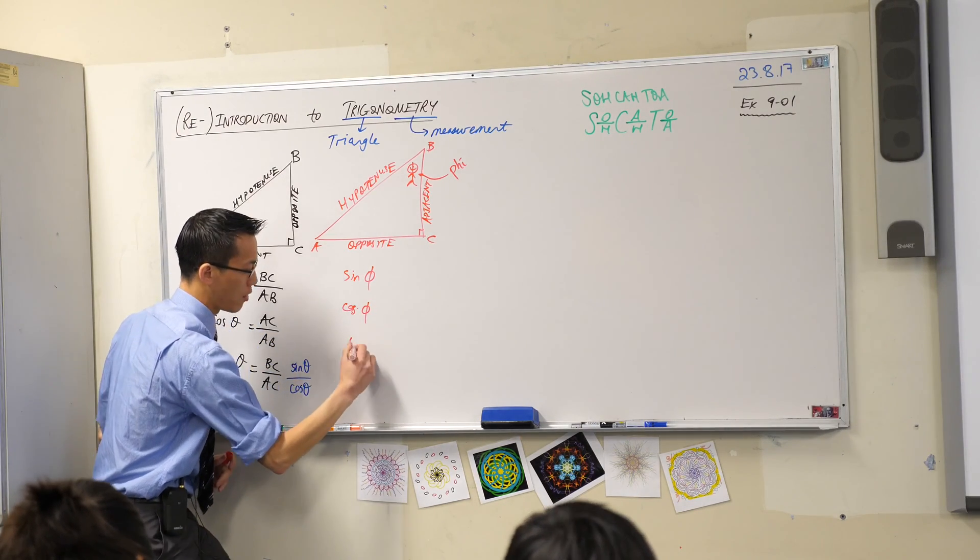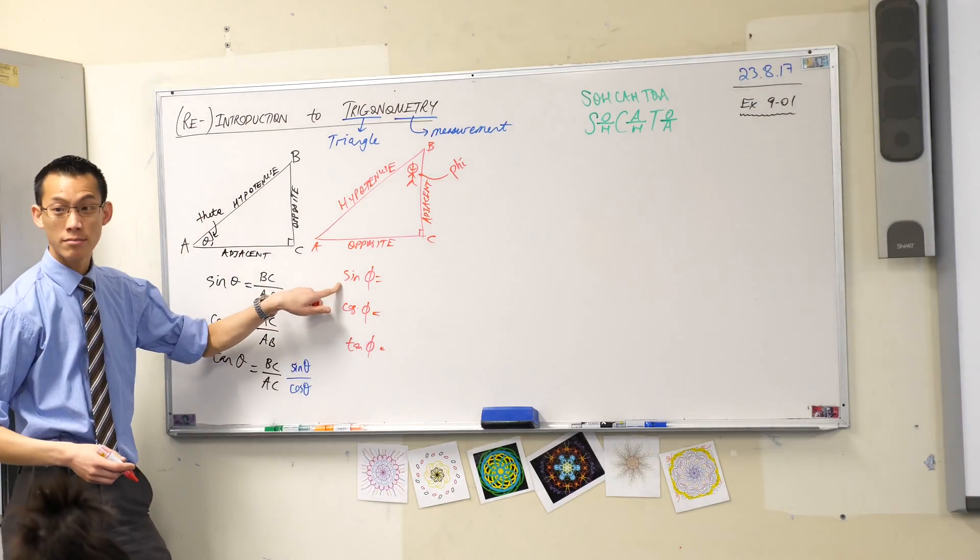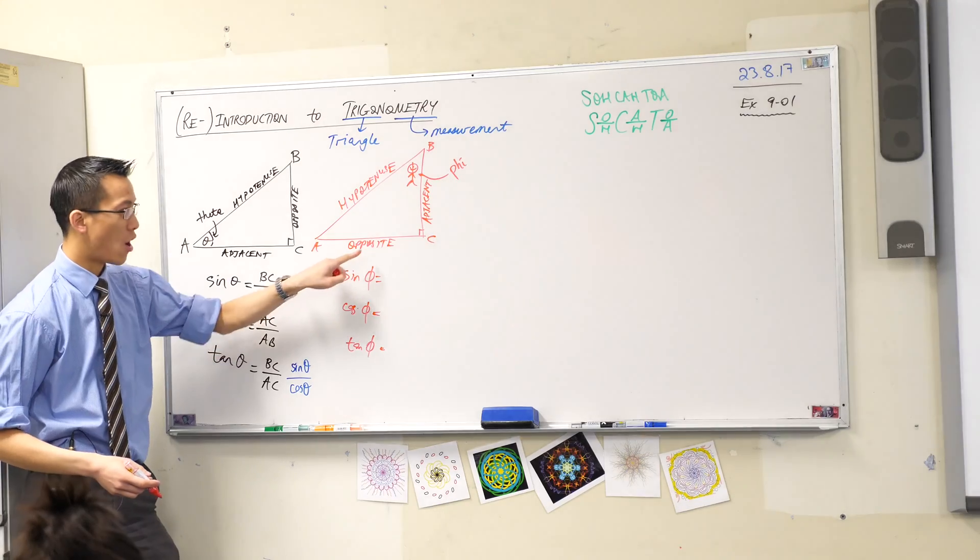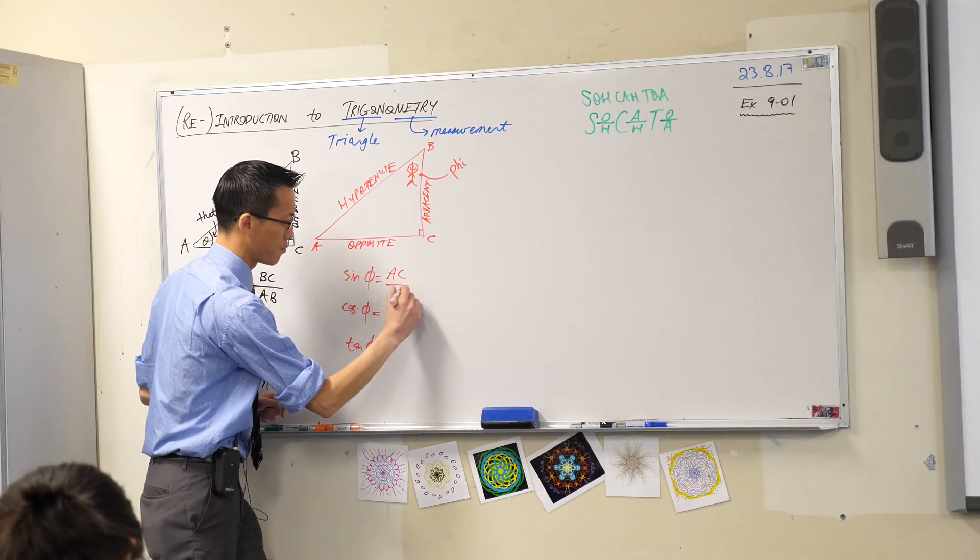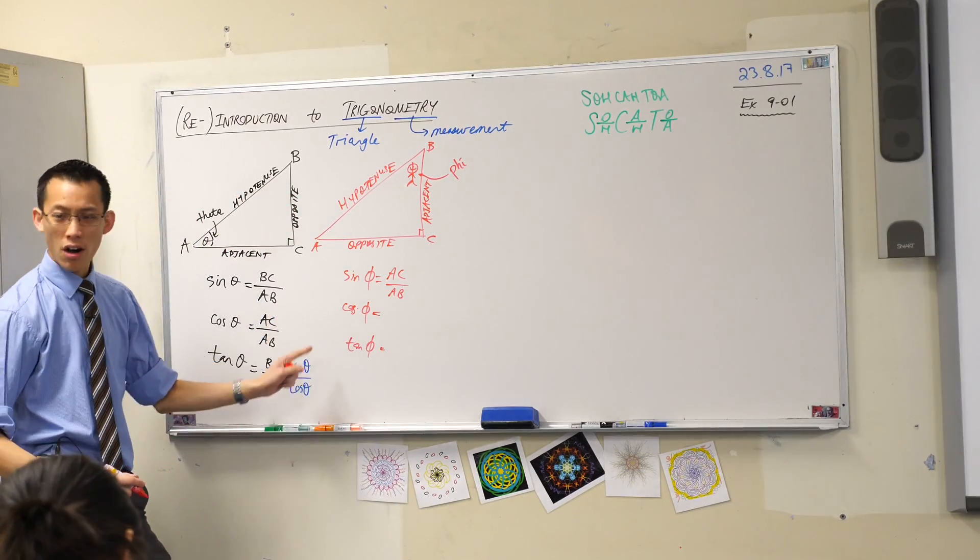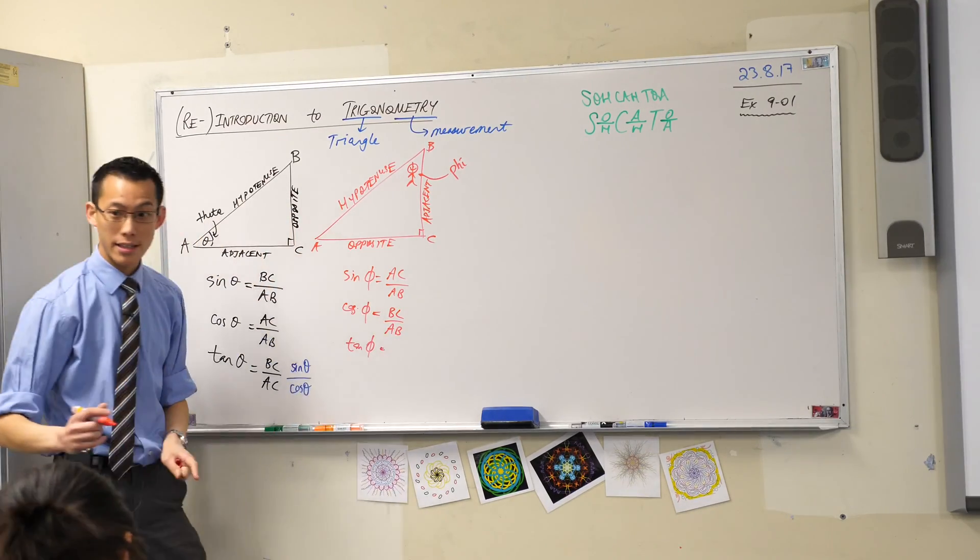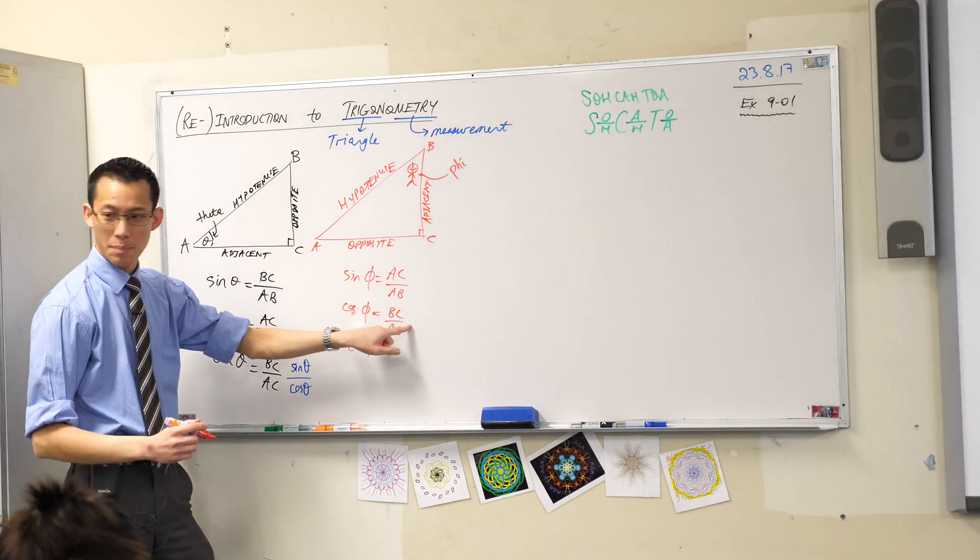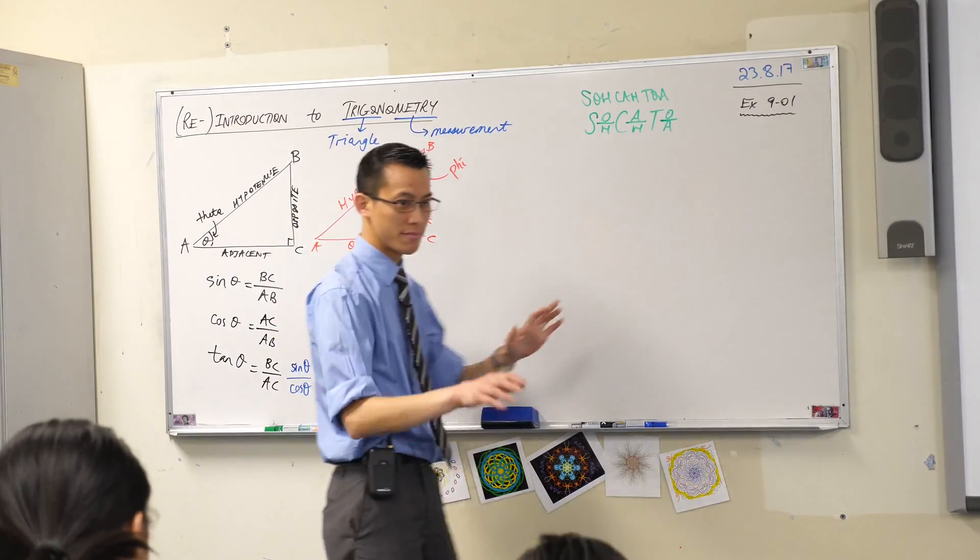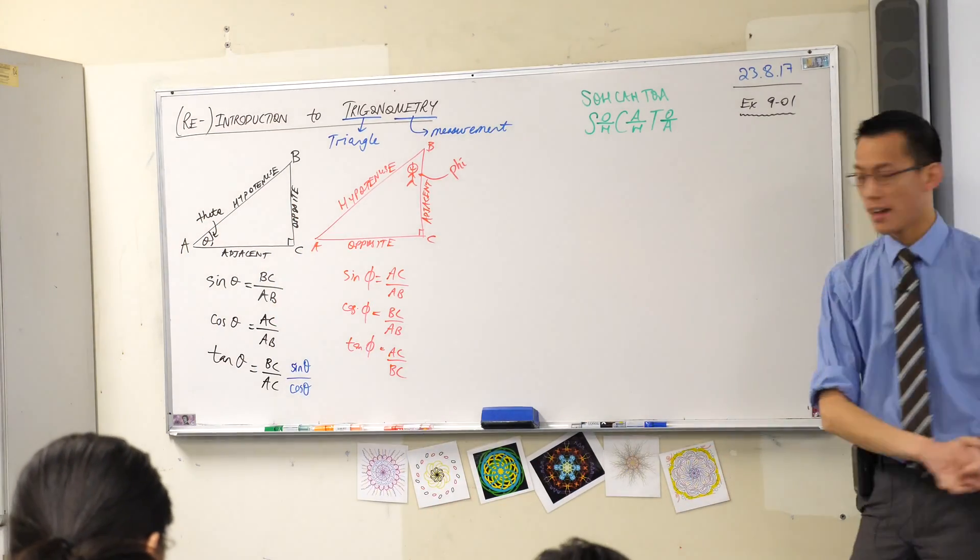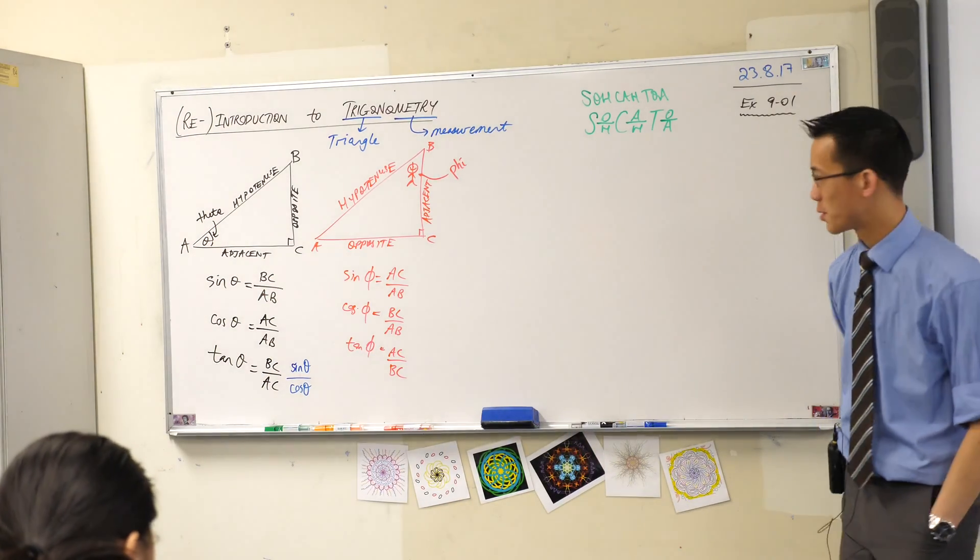So let's write for this particular angle, sine phi, cos phi, and tan of phi. Okay? One at a time. Sine? Opposite on hypotenuse. AC on AB. Okay? Cos phi will be BC on AB. And then lastly, yeah, AC on BC. Okay? So, not too complicated an idea. And of course, we could change all of these into numbers, dependent on how big or small our triangle is. Okay?